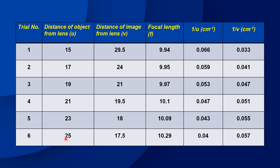Then U is 25, corresponding V is 17.5, and F is 10.29. 1 by U is 0.04 and 1 by V is 0.057. Now let's look at the UV reading.